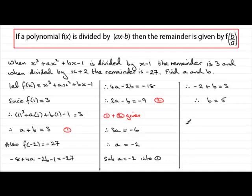So we've got our results then. So at the end of the day just summarize therefore a is minus 2 and b equals 5.